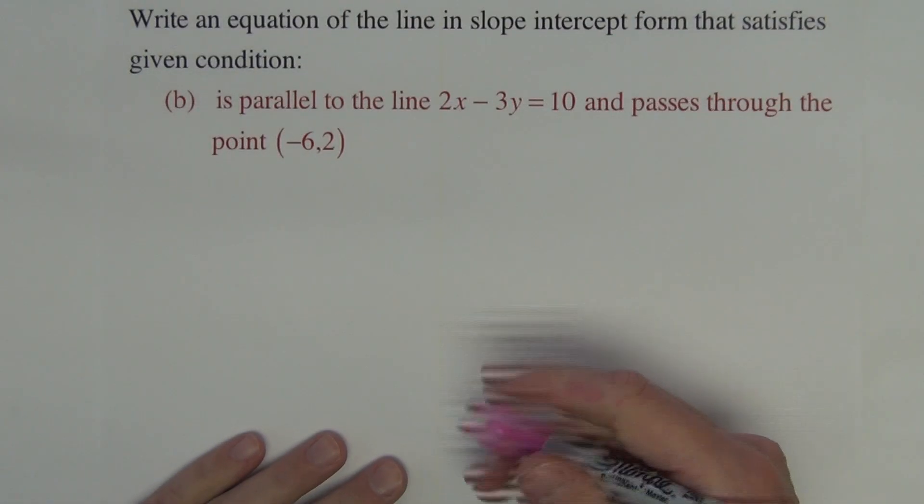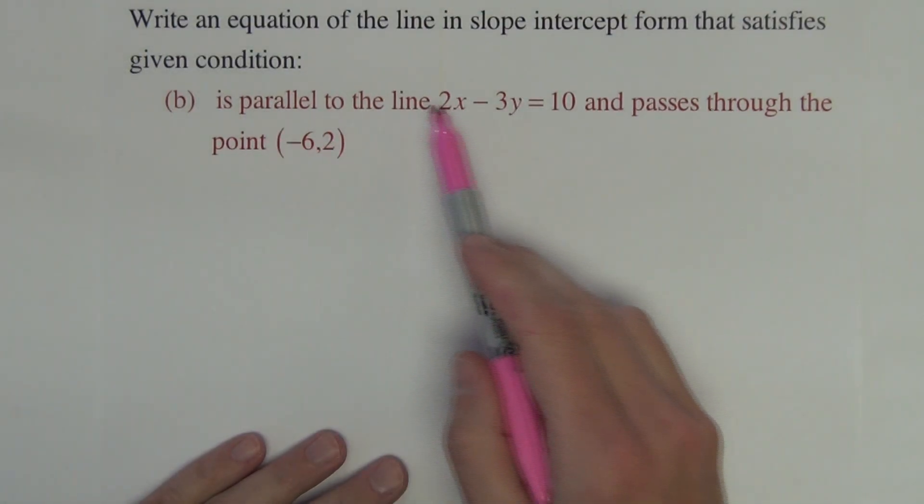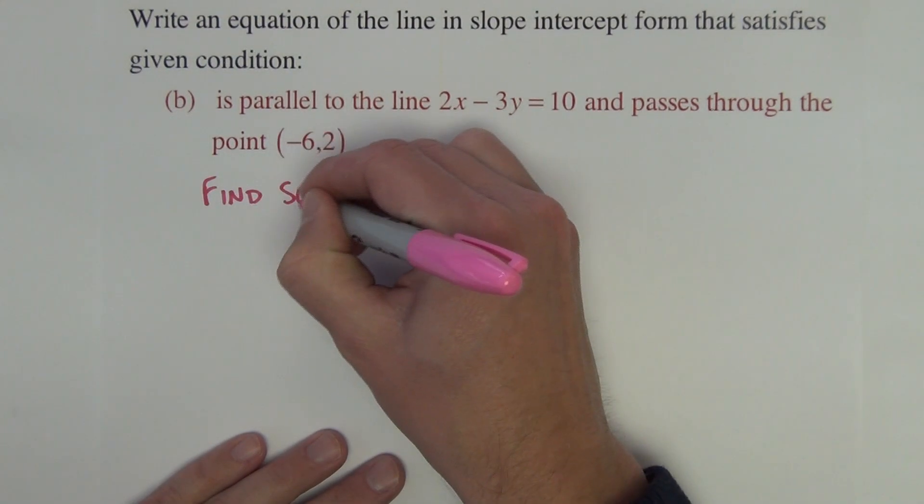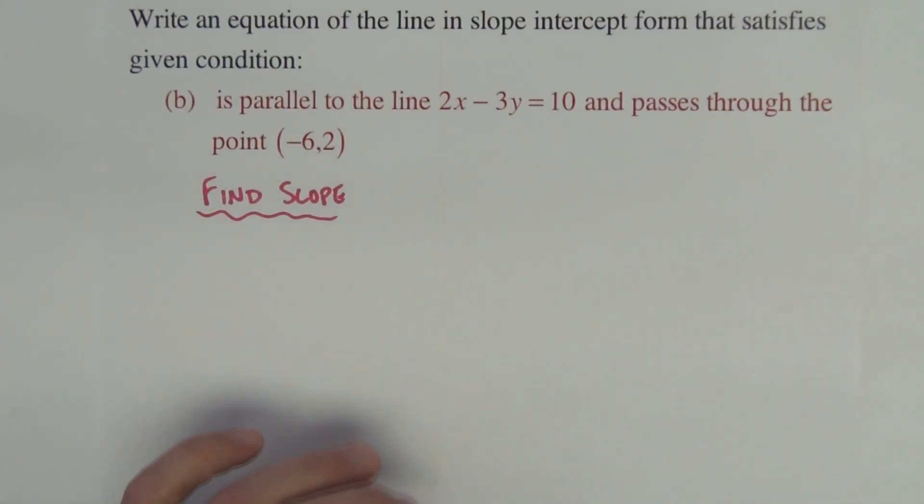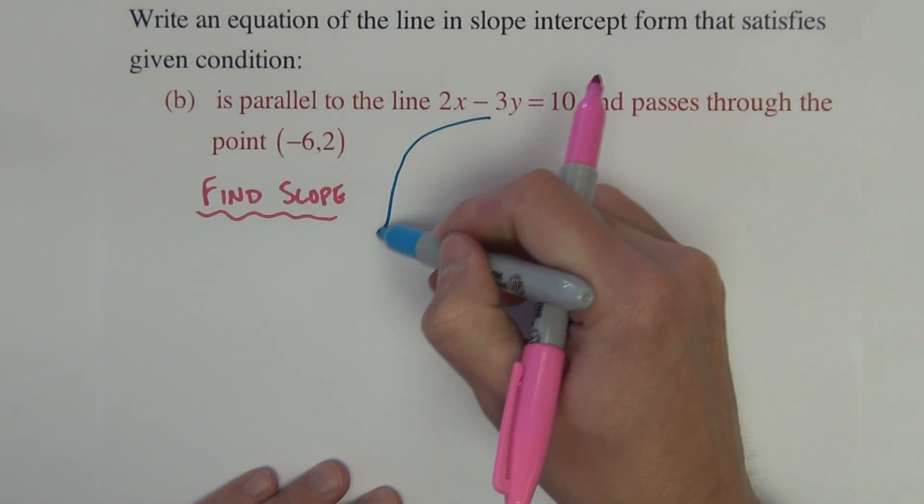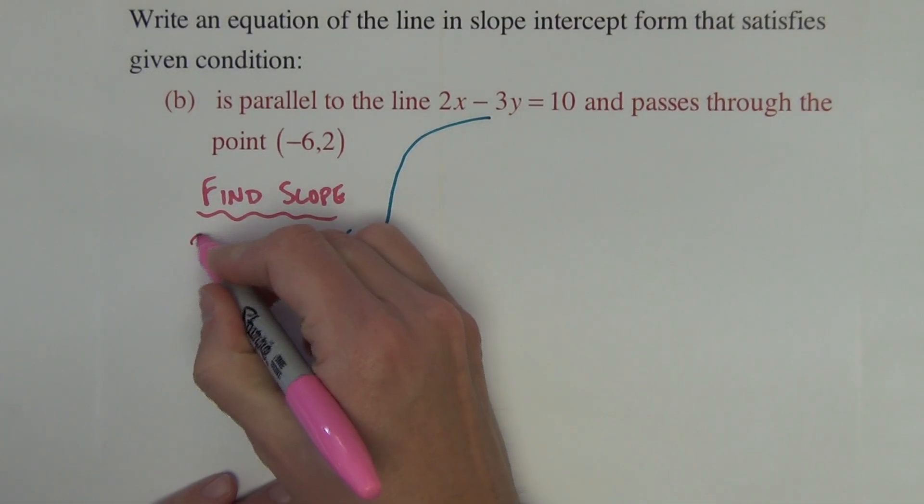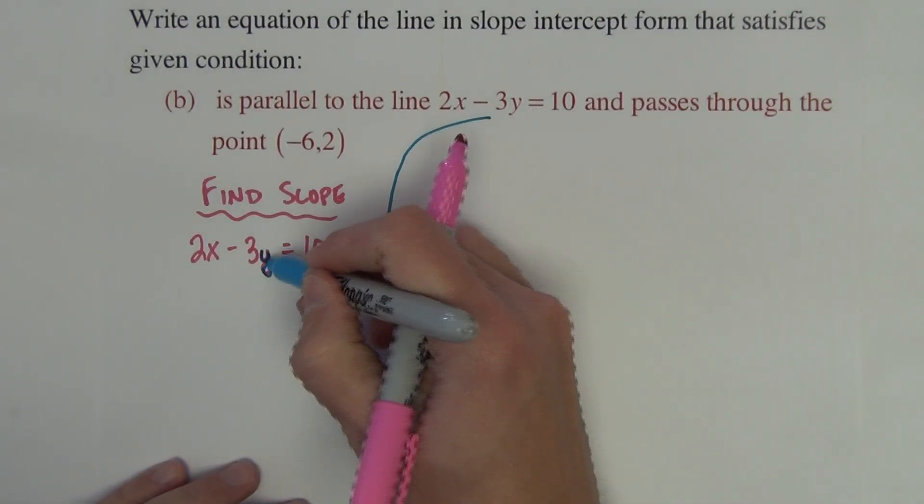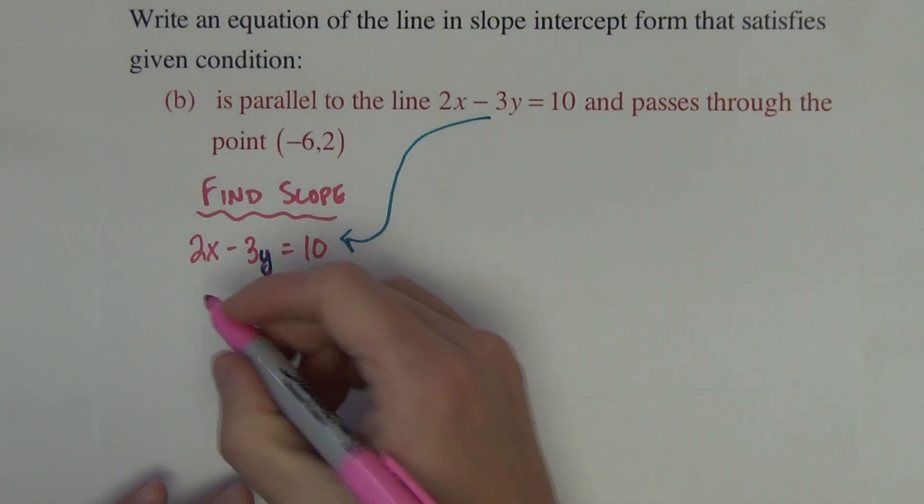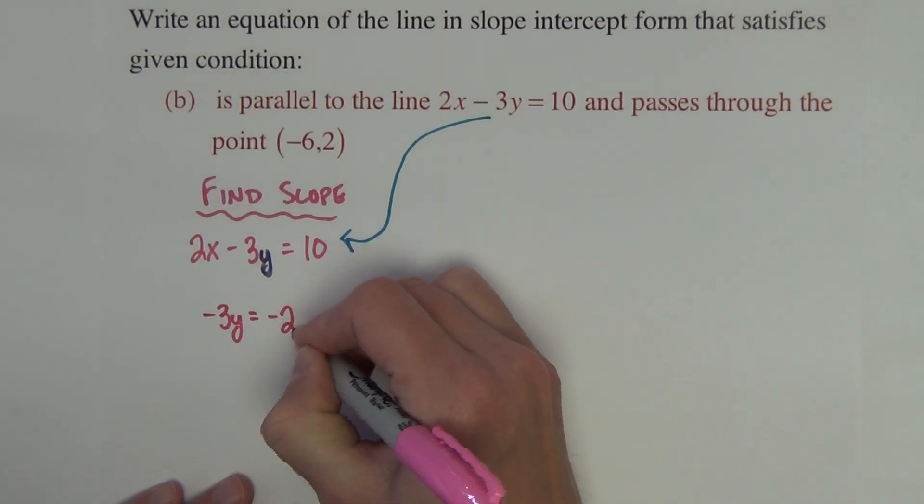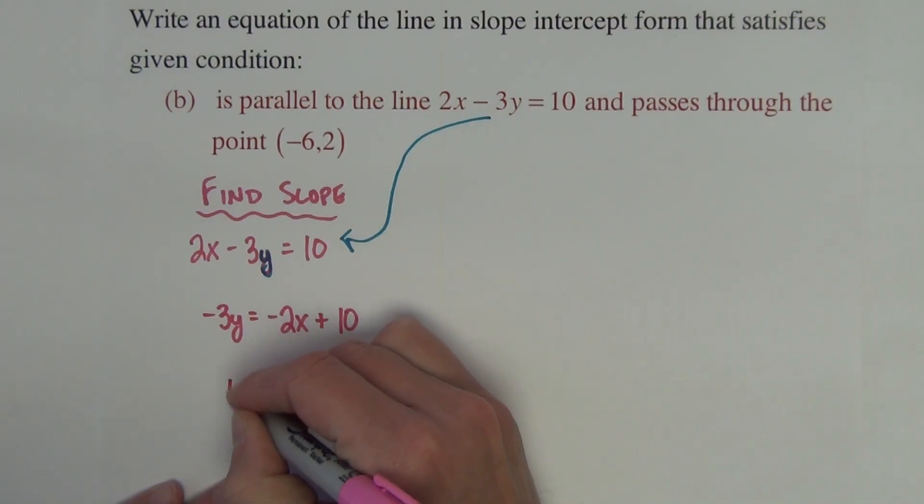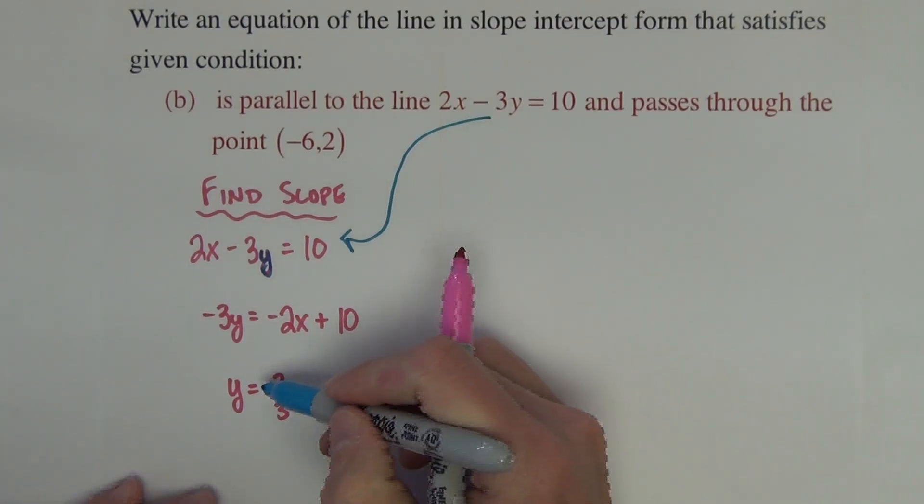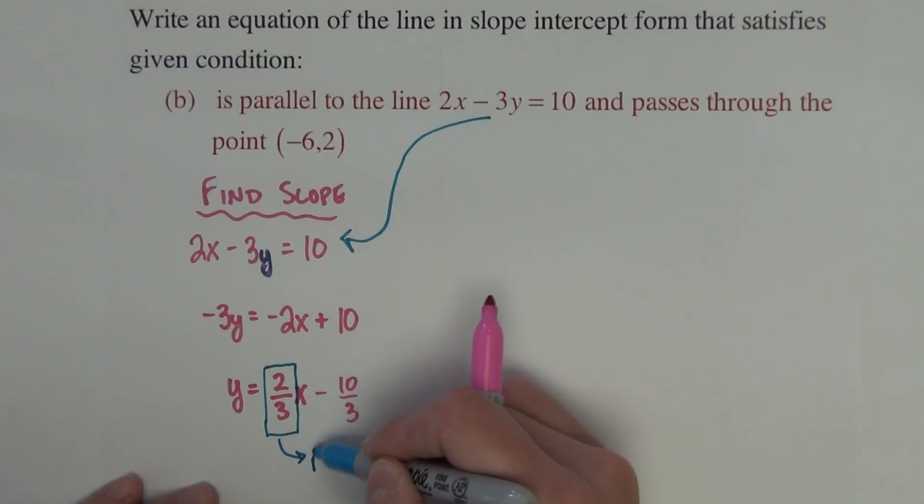This next question has the same directions, just different starting information. We want to be parallel to the line 2x minus 3y equals 10 and pass through the point (-6,2). So the first thing to do is again find the slope. To find the slope of our line, we need to use this line. We're going to solve this line for y, which will allow us to see what the slope is. Negative 3y equals negative 2x plus 10, divided by negative 3. We get positive 2 thirds x minus 10 thirds. This is the number we want, that's our slope.